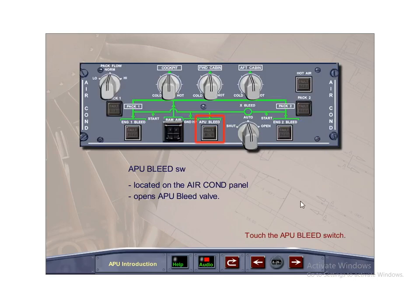The APU Bleed Air push-button switch is located on the air conditioning panel. It controls the operation of the APU Bleed Valve.